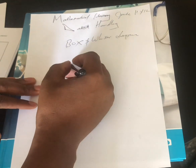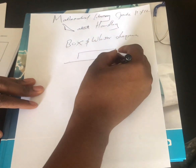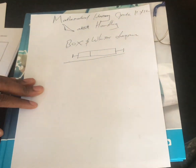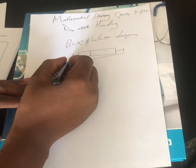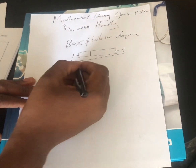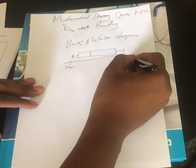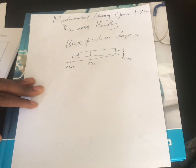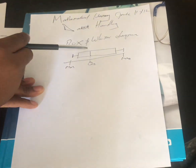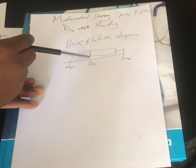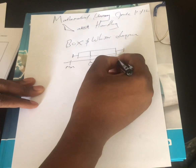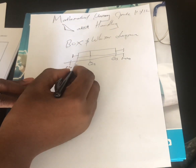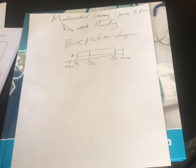This is the structure of a box and whisker diagram, just to give you an example. We're going to have our minimum value and our maximum value. In the middle we have Q2, which is our median. Here we have our upper quartile or Q3, and here we have our Q1 or lower quartile.